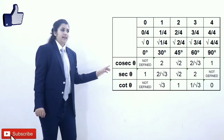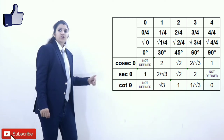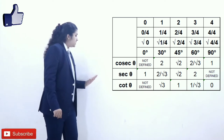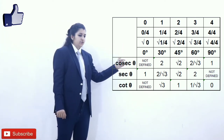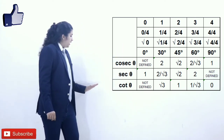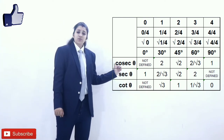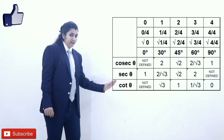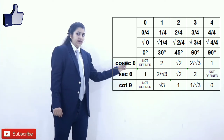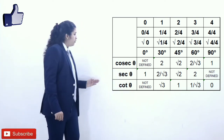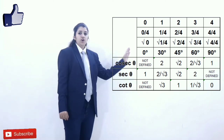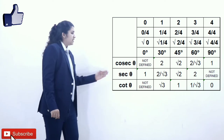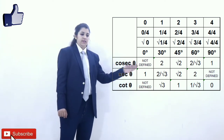Cos 30 degrees is root 3 upon 2, so the reciprocal is 2 upon root 3, meaning sec 30 degrees is 2 upon root 3. Sec 45 degrees — since cos 45 degrees is 1 upon root 2 — sec 45 degrees is root 2. Cos 60 degrees is 1 upon 2, so sec 60 degrees is 2.